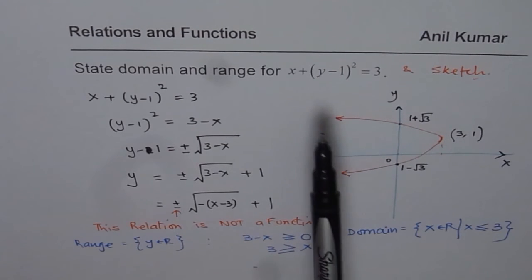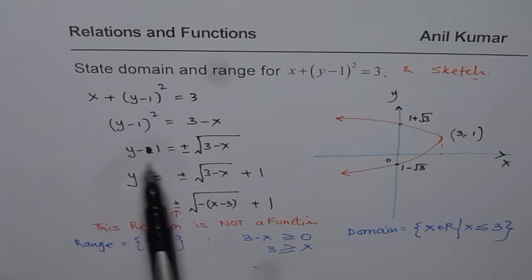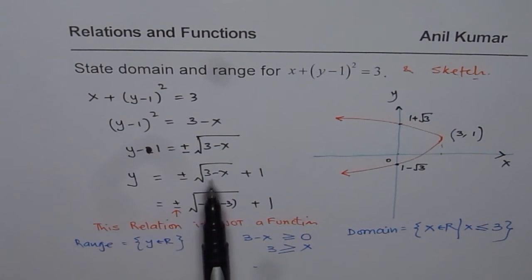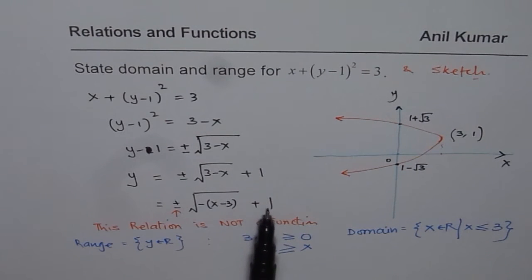Steps involved are isolate y. Once you isolate y, you understand that this relation is not a function. After that, you can find domain and range. Domain within the square root has to be non-negative, that gives us domain and range is very clear. It's all real numbers since there is no restriction on range. I hope that helps. Thank you and all the best.